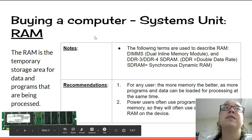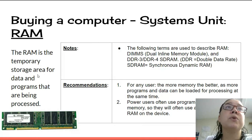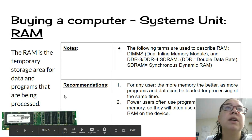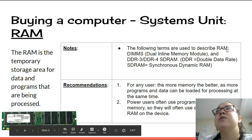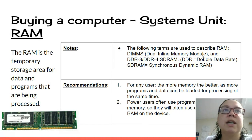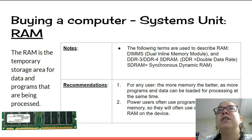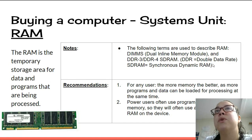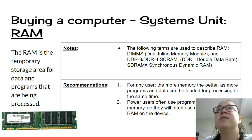RAM — random access memory — is the temporary storage area for data and programs that are being processed. The following terms are used to describe RAM: DIMM, dual inline memory module, and the RAM is attached on the little black bits on the card. DDR3, DDR4, SDRAM — DDR is double data rate, SDRAM is synchronous dynamic RAM.